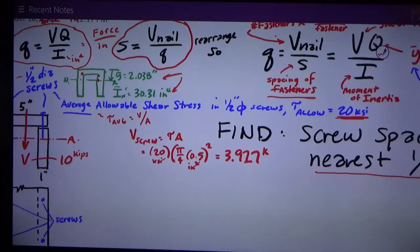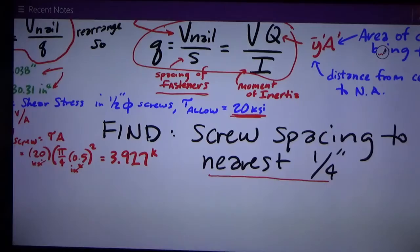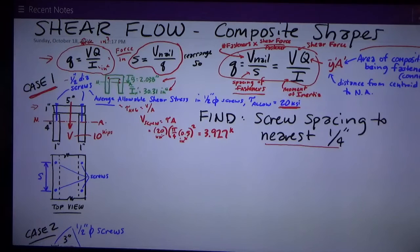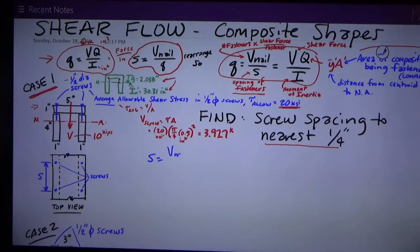My units here are inches squared, so I got inches squared divided by inches squared, they cancel out, and I just get kips. So each screw can provide 3.927 Kips of shear flow transfer. Now, I want to rearrange this equation up here. I have this equation, Q is equal to V nail over S is also equal to VQ over I. I want to rearrange that because what I want to know is the screw spacing to the nearest quarter inch. So I rearrange that equation, and it now becomes S is equal to V nail times I divided by VQ.